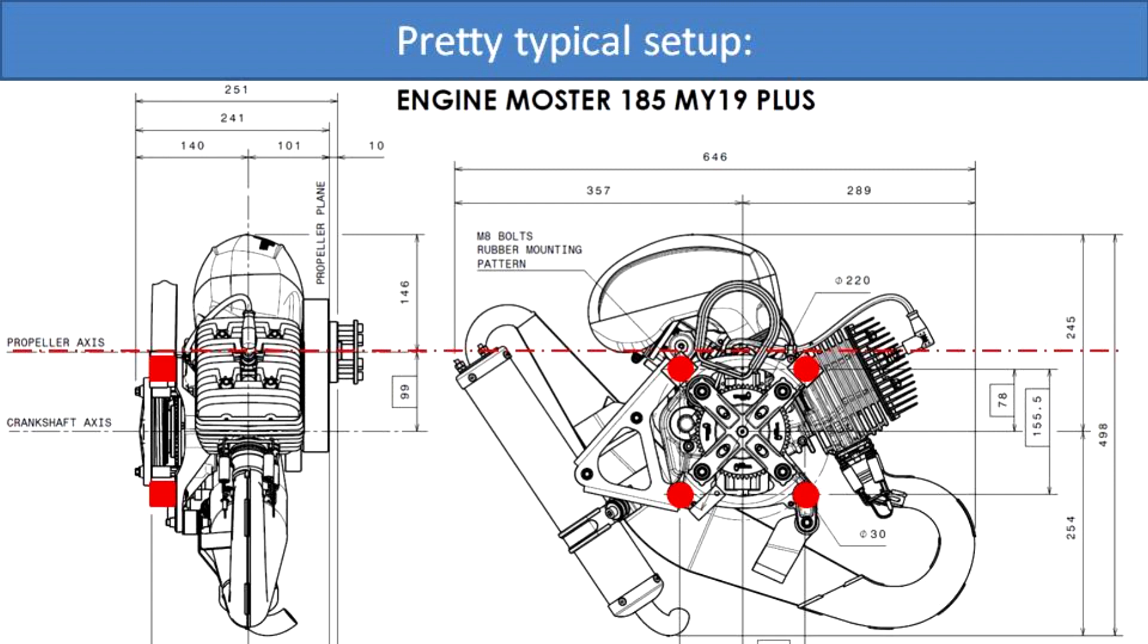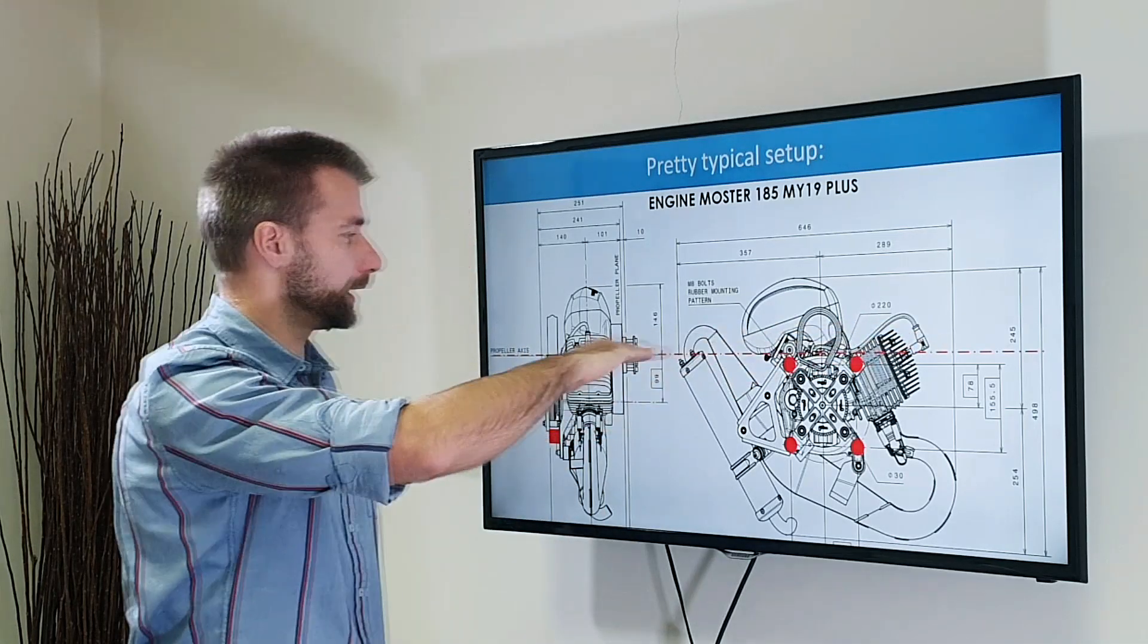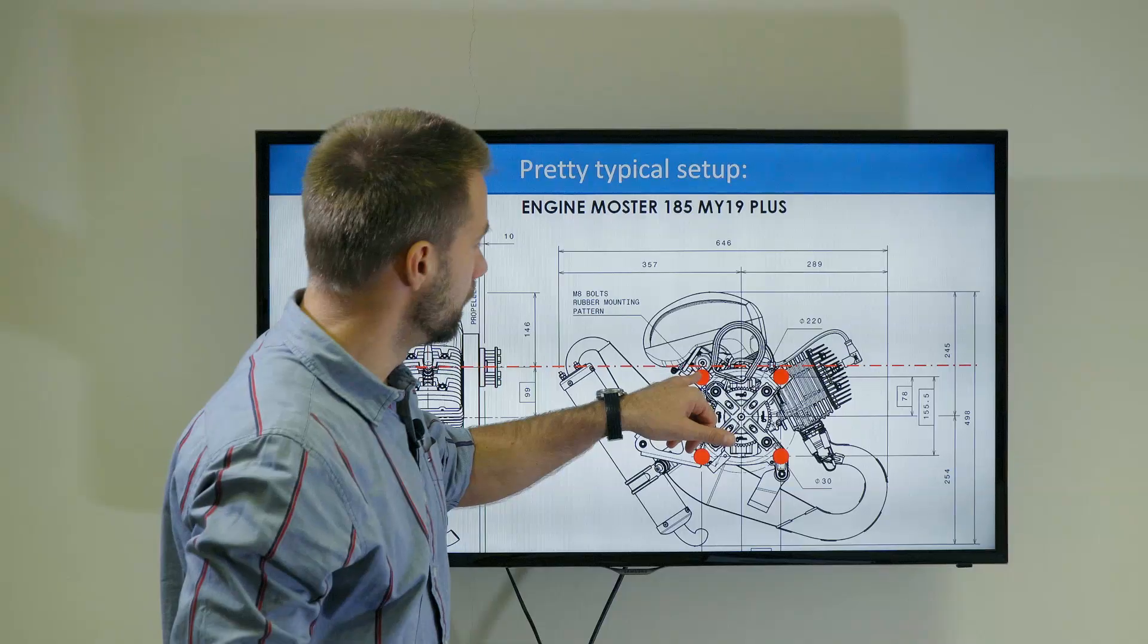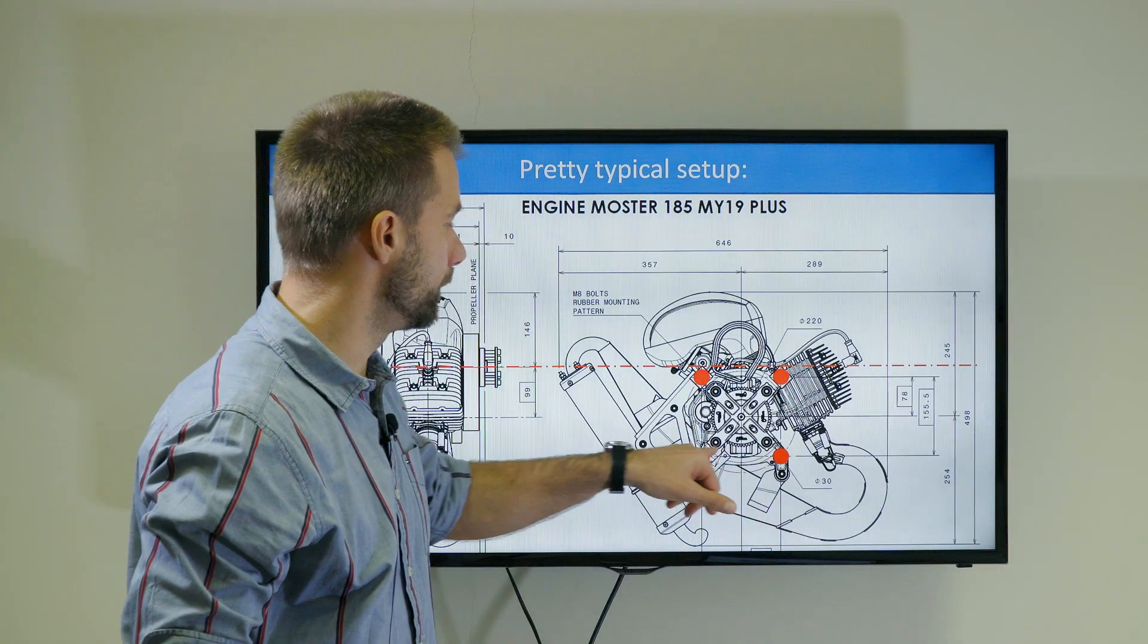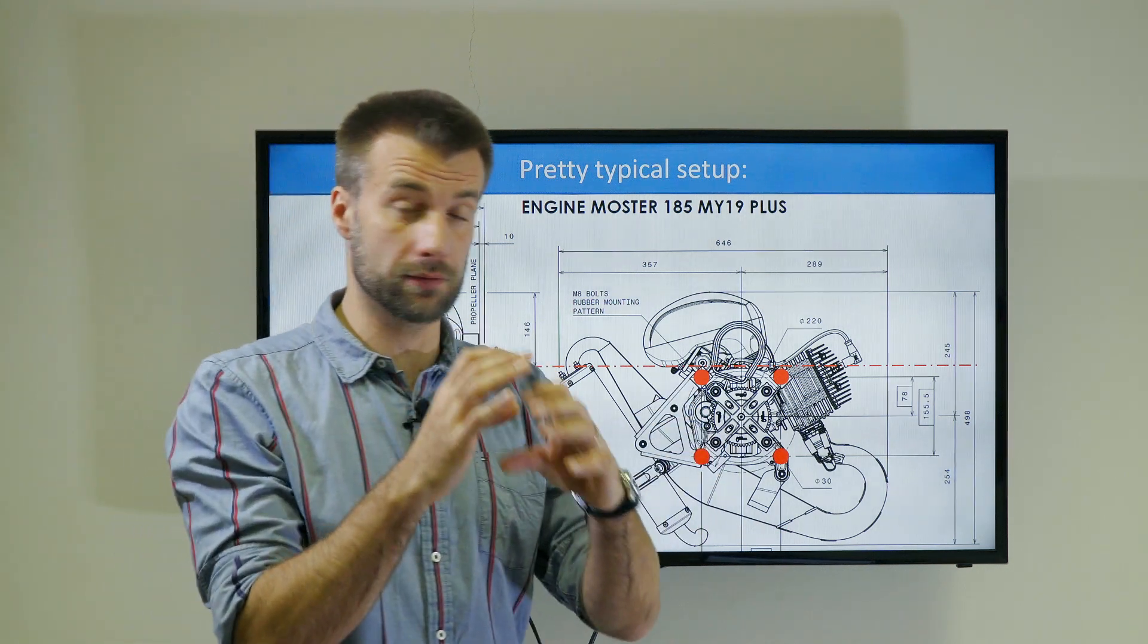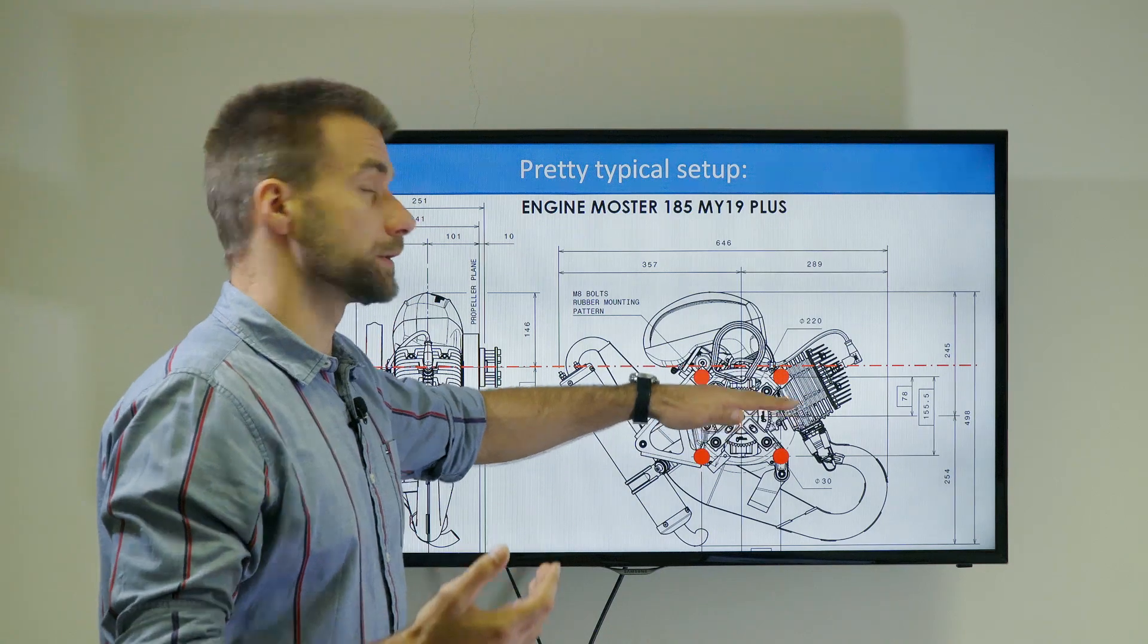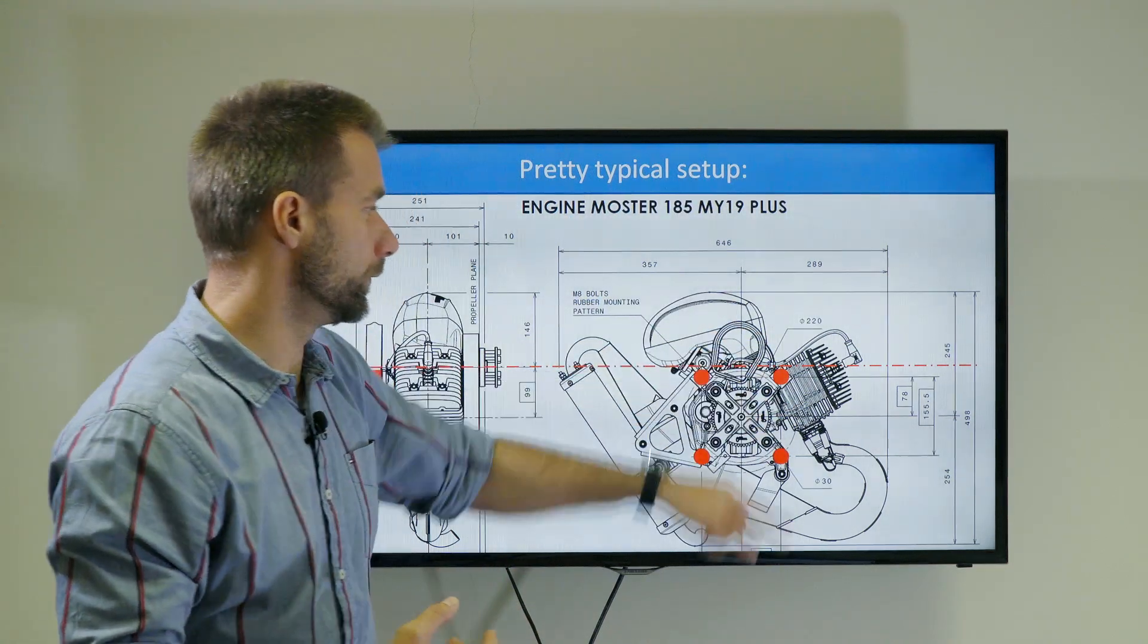Here we have the dimensions of the favorite Vitorazzi engines. Here you have the red line indicating the thrust line, the propeller axis. And you see all four mounting points, all these rubber mounts are actually below the thrust line, or the thrust line is outside of these four.